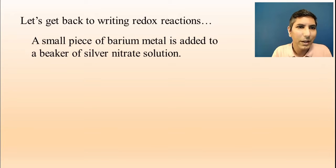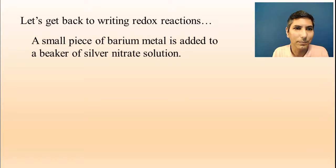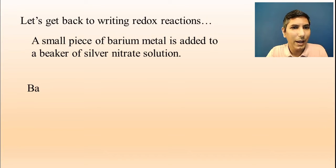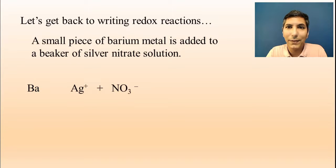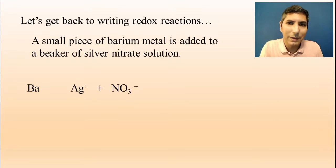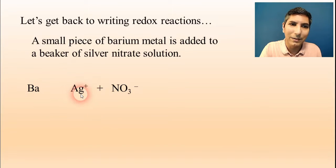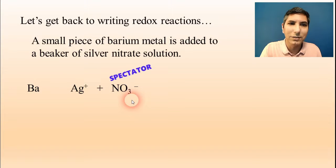Here's our first example: a small piece of barium metal is added to a beaker of silver nitrate solution. The barium metal is written as just Ba. Silver nitrate is an ionic compound — it's soluble — so we write it in its ionized form: Ag+ and NO3-. When writing these redox reactions, a metal reacts with a metal ion, which means the nitrate ion here is just a spectator ion.